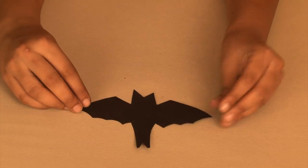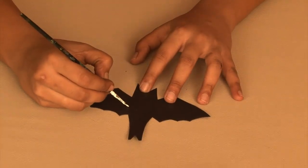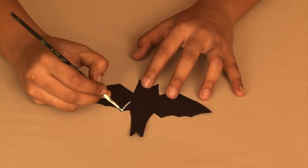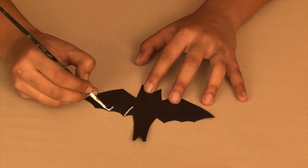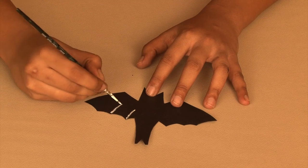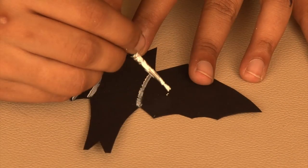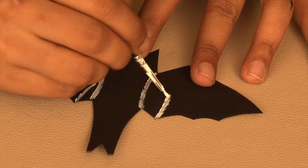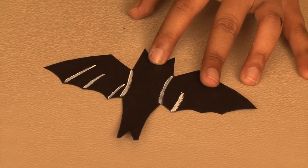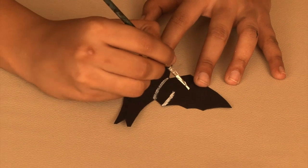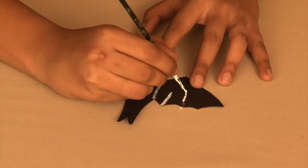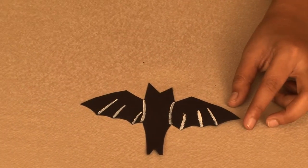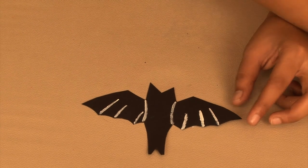But my bat looks kind of bald so with white paint I'm going to give it some markings. The wings look so much better now with these white markings.